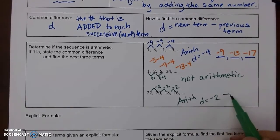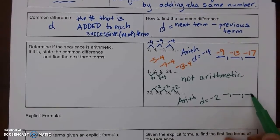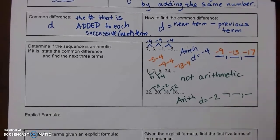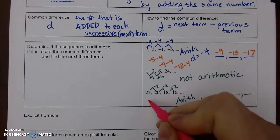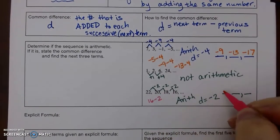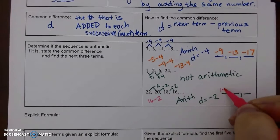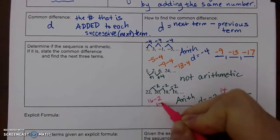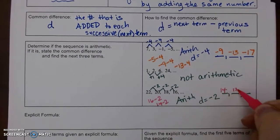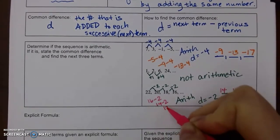The next three terms of the third sequence continuing with d = -2: 16, 14, and 12.